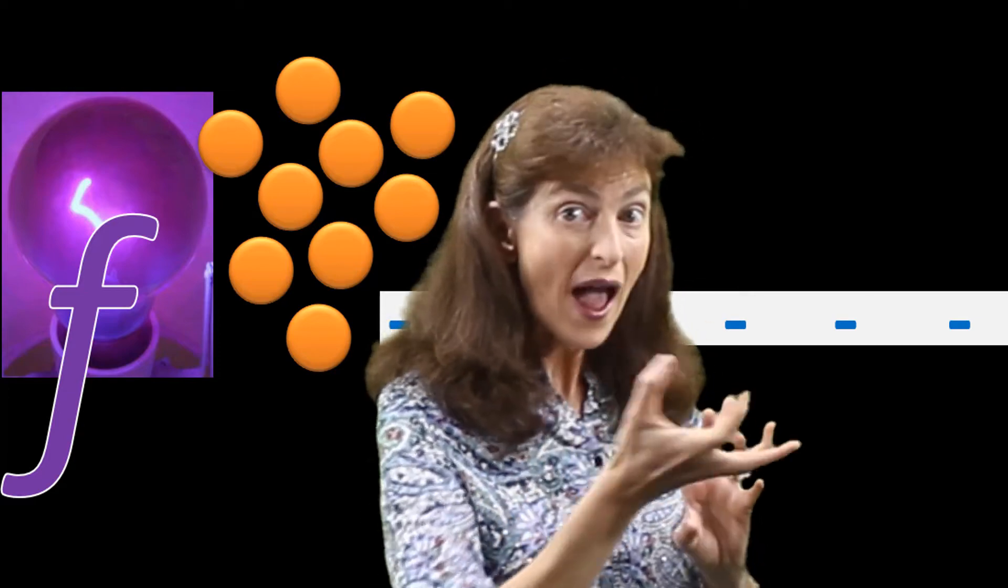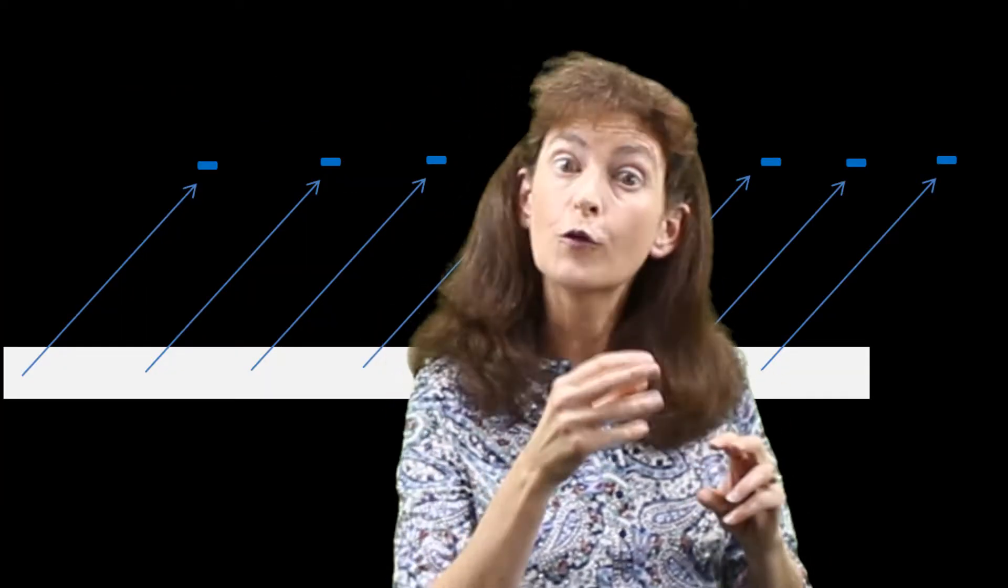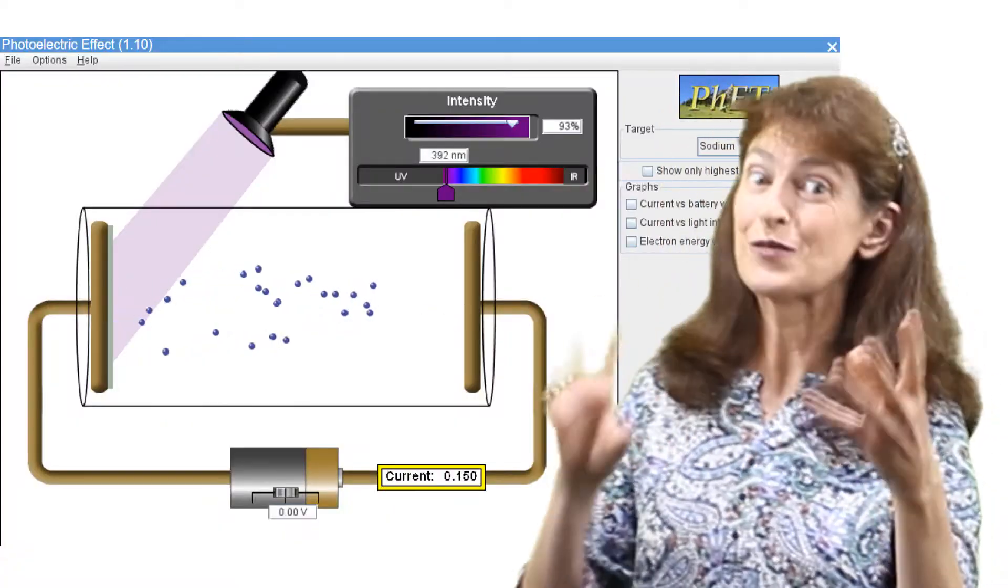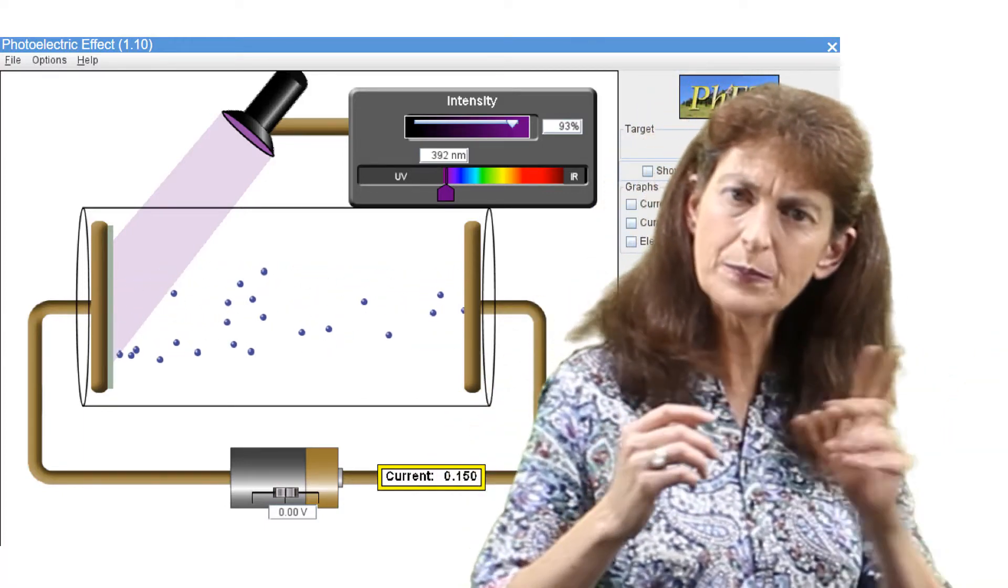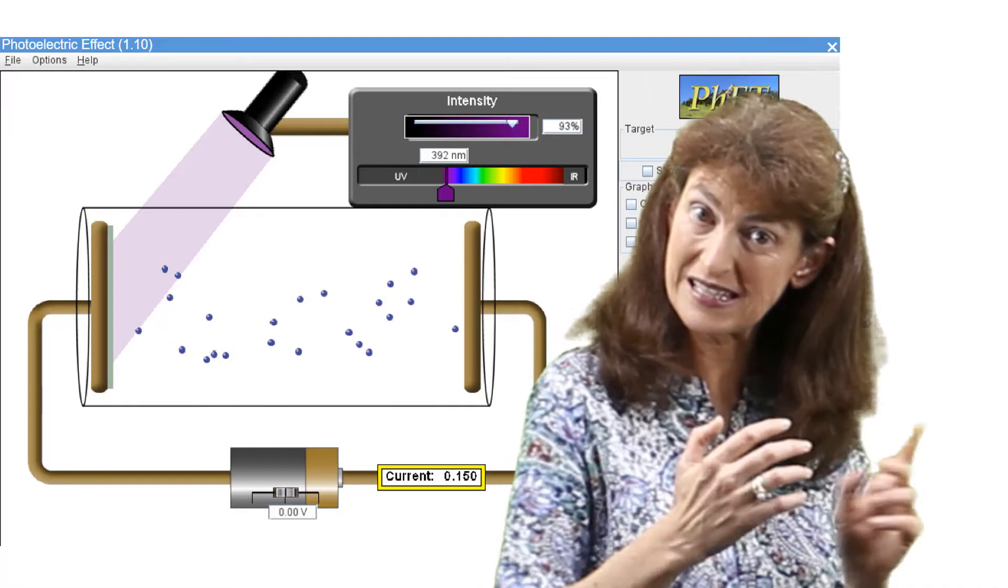Then it would take more energy to break its bonds with the metal. And then there'd be less left over for kinetic energy. And that's why when you see a simulation of this you see electrons being shot off at different speeds.